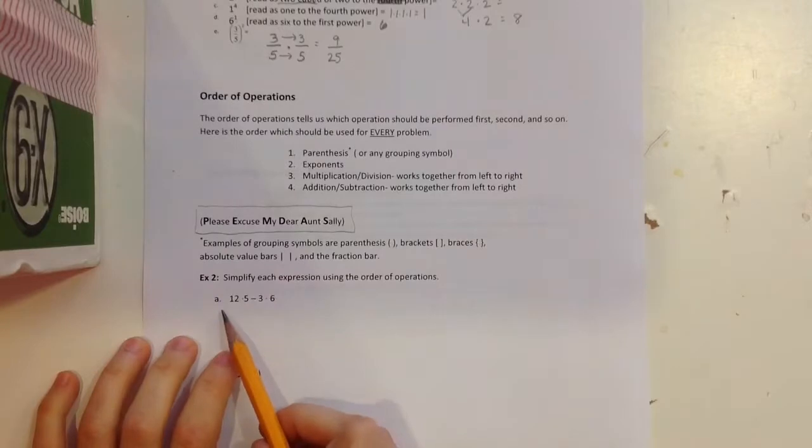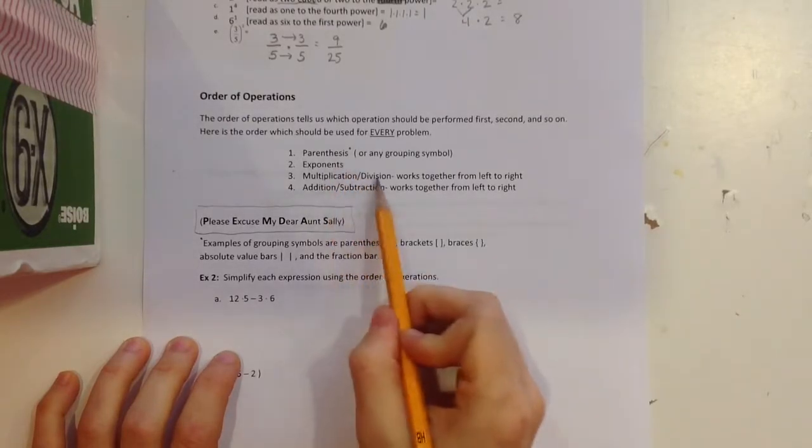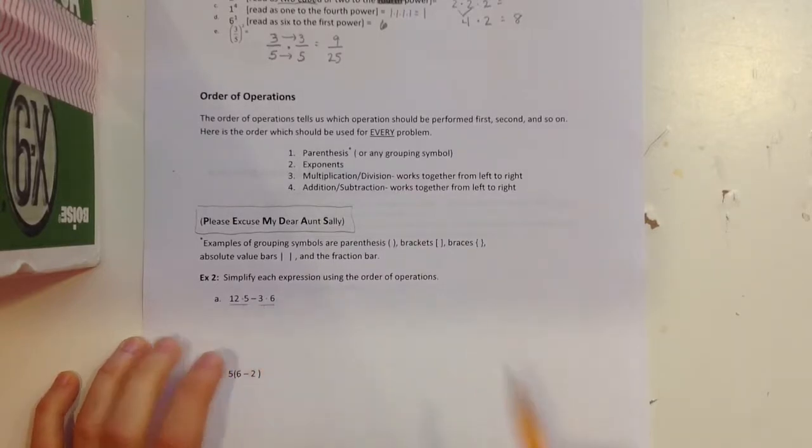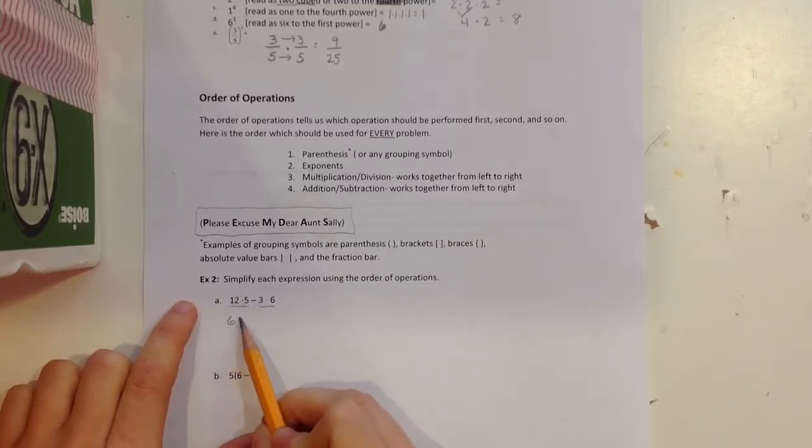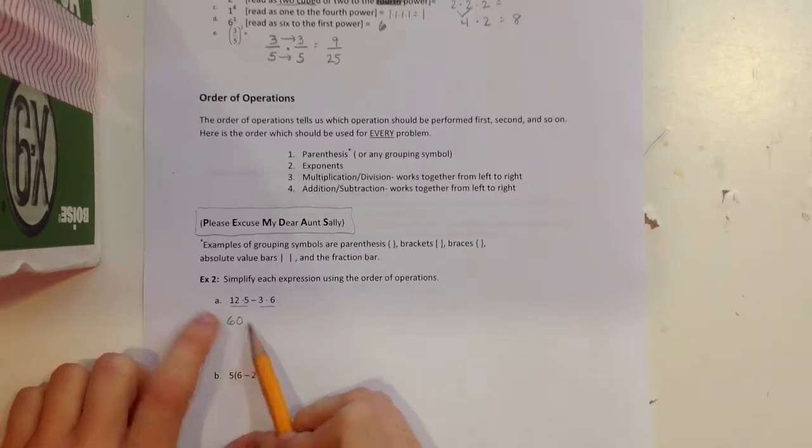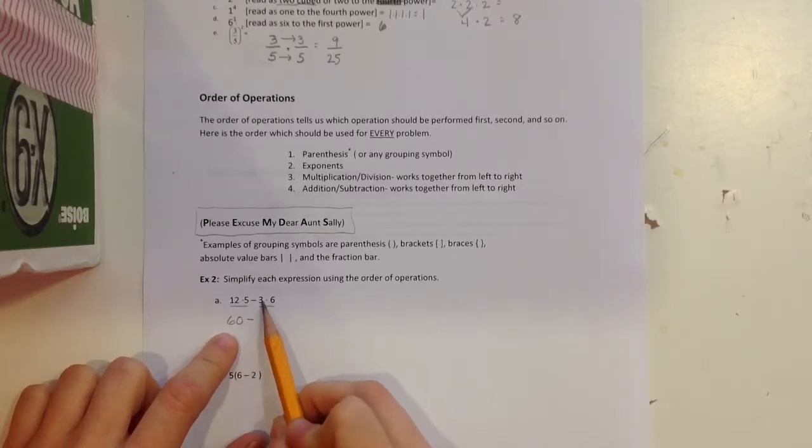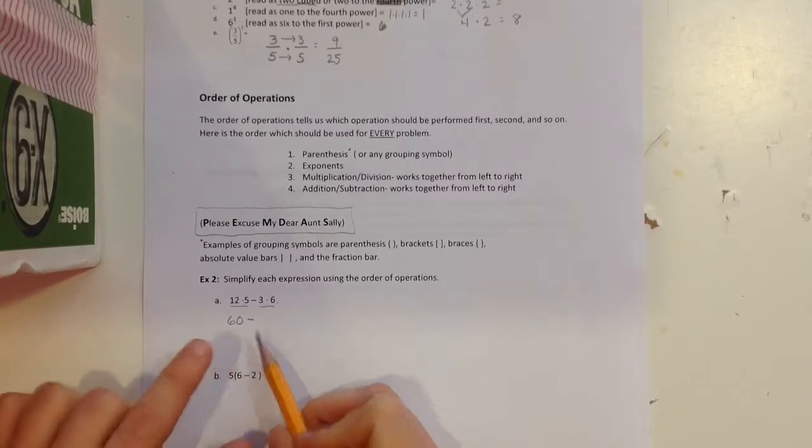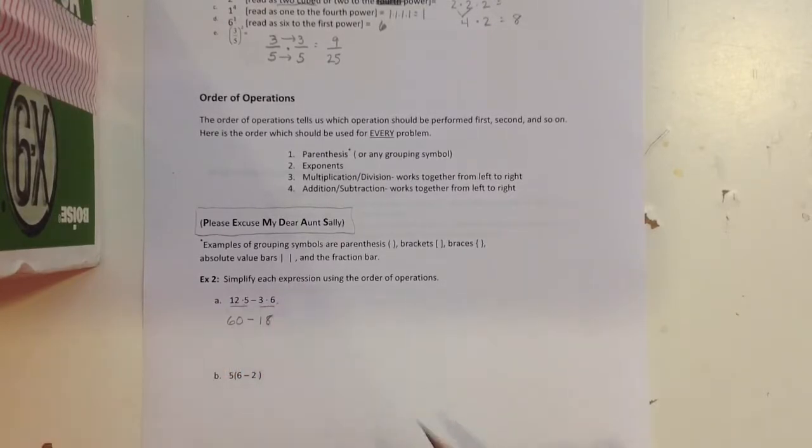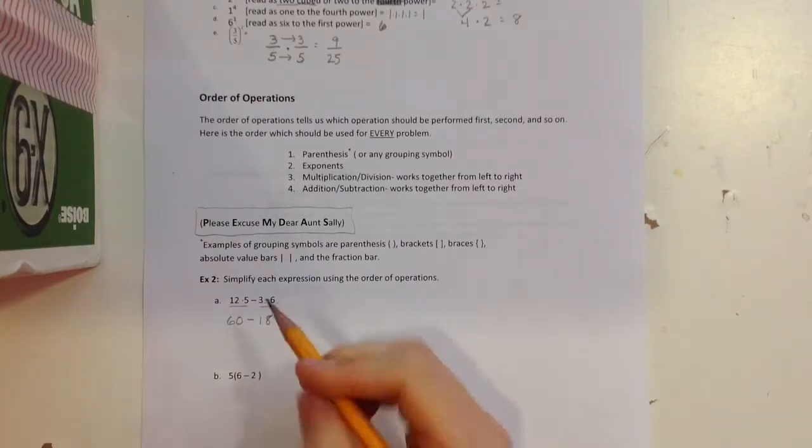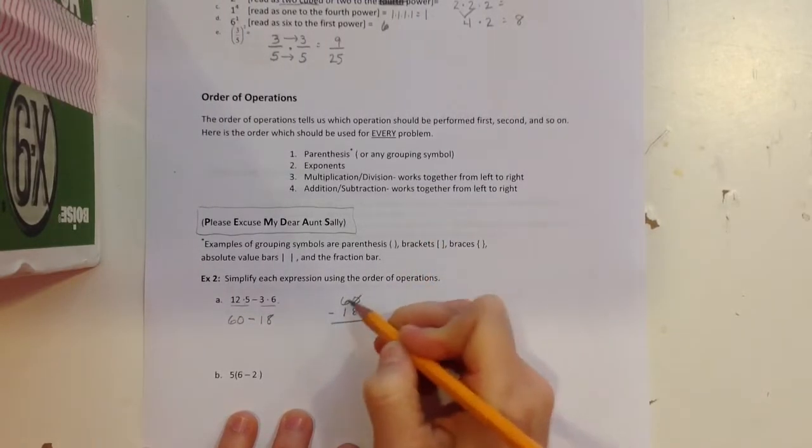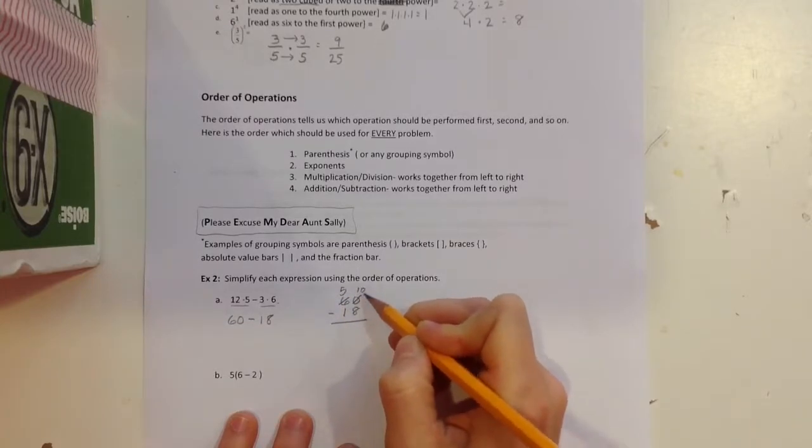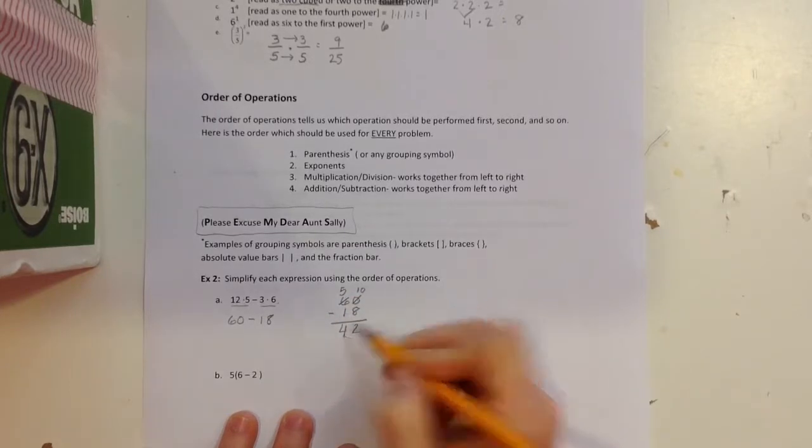So let's work this first one. I don't have any parentheses, any grouping symbols, I don't have any exponents, so that means I'm going to look for multiplying and dividing next. I have a multiplication problem here and here, so you always want to work it from left to right. I'm going to work the 12 times 5 first, so 12 times 5 is 60. If you need to do scratch work over to the side to get that, that's fine. I'm going to bring down my minus sign, and you can actually do 3 times 6 in this step here. 3 times 6 is 18. Now all there is left to do is to subtract. I'm going to have to borrow 1 from the 6, make it a 5, make that 0 a 10. 10 minus 8 is 2, 5 minus 1 is 4. So my answer is 42.